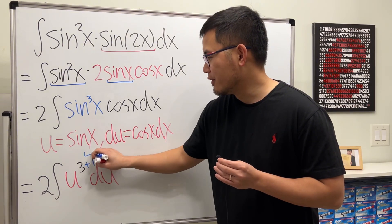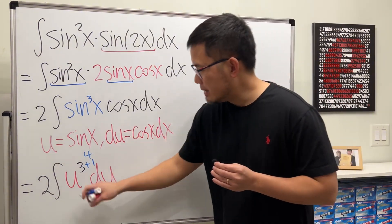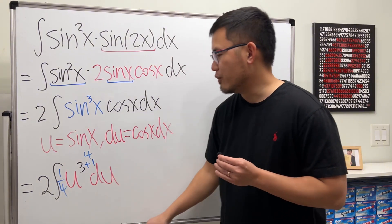Add 1 to the power, we get 4 for the new power, divided by the new power. We have the 1 over 4.